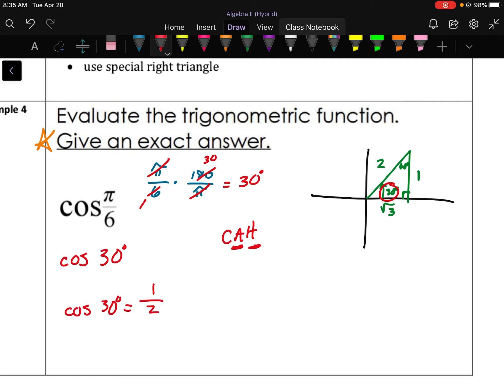And because we are evaluating cosine from this angle here, cosine is adjacent over hypotenuse. So cosine of 30 degrees would be the adjacent side, which is the square root of 3, over the hypotenuse, which is 2. So cosine of 30, which is also π over 6 radians, is square root of 3 over 2.